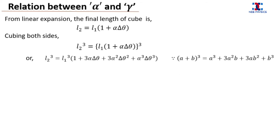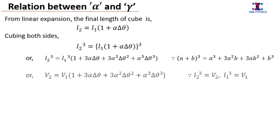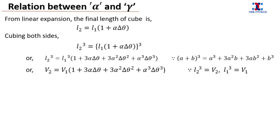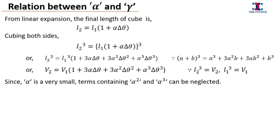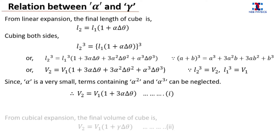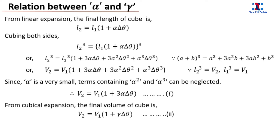Using the formula of (a + b) whole cubed, we get the following expression. The quantity l1 cubed is the initial volume of the metal cube, written as v1, and l2 cubed is the final volume after expansion, written as v2. Since alpha is very small and less than one, alpha squared and alpha cubed are further smaller, so we can neglect the terms containing alpha squared and alpha cubed. After neglecting them we get the following expression. From the cubical expansion, the volume can also be written as v2 = v1 times (1 + gamma·delta theta).